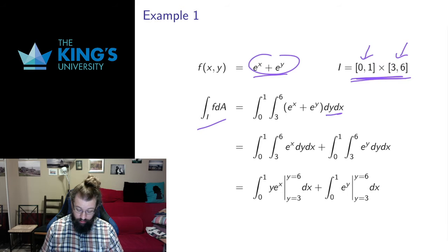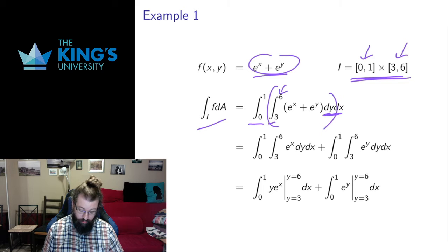I can do this as an iterated integral. I can choose whichever order I want. If the y goes from 3 to 6, then the inside is y and the outside is x. Notice these have to match from inside to outside. That means I'm going to do the y variable first, always moving from the inside out. Before I do any of that, since this function is a sum, I'm going to split it up into two pieces by linearity and do the two pieces separately.